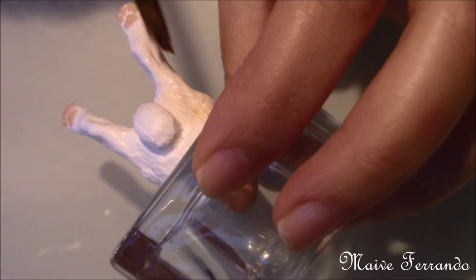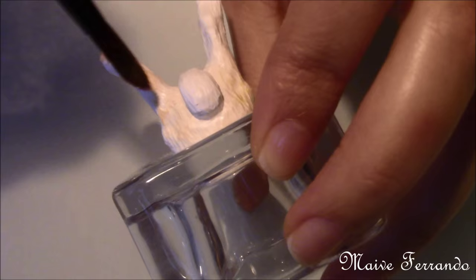To give the rabbit some colour I used soft pastels. You can also paint it with acrylic paint once baked or you can leave it white.